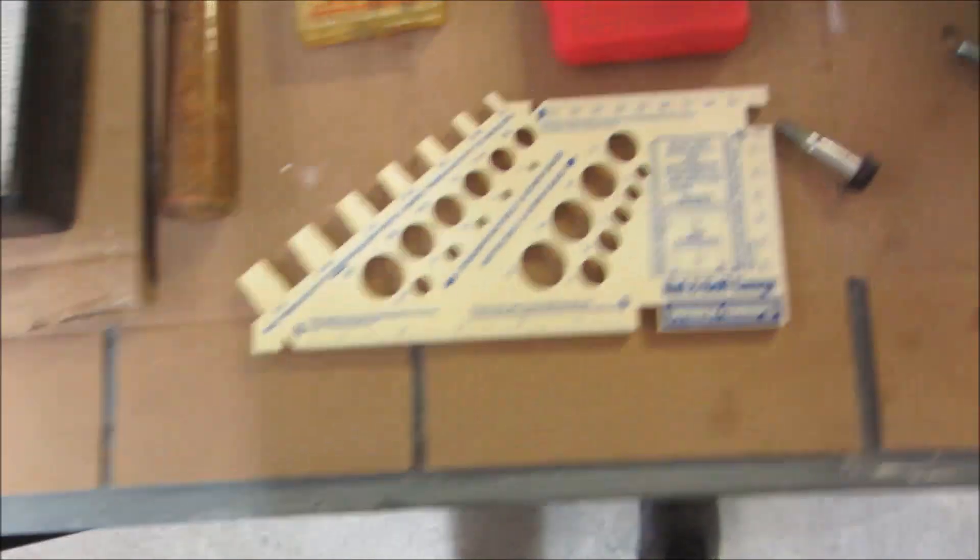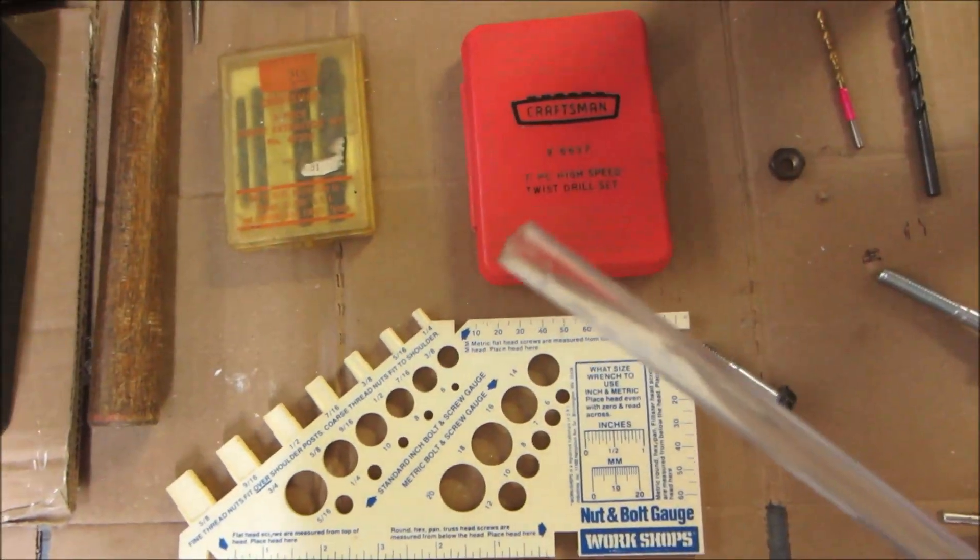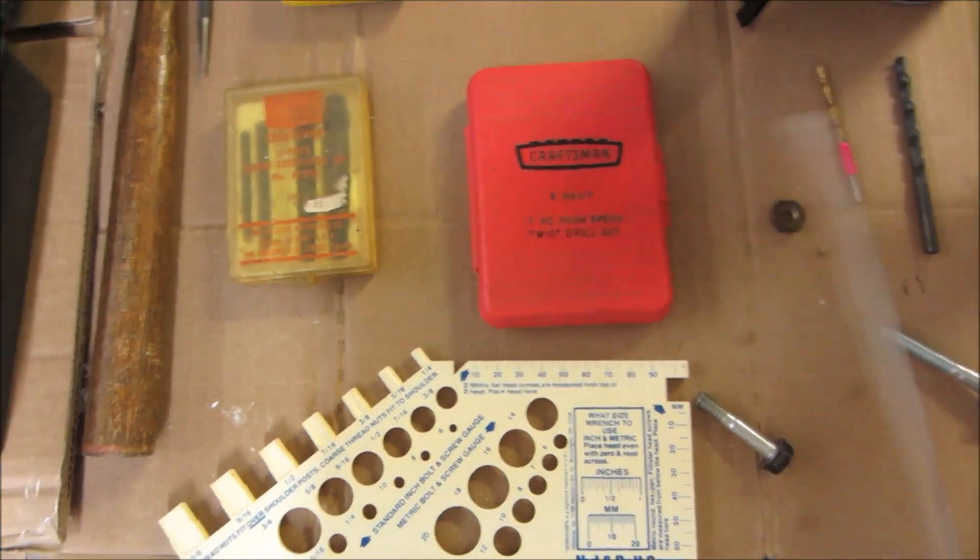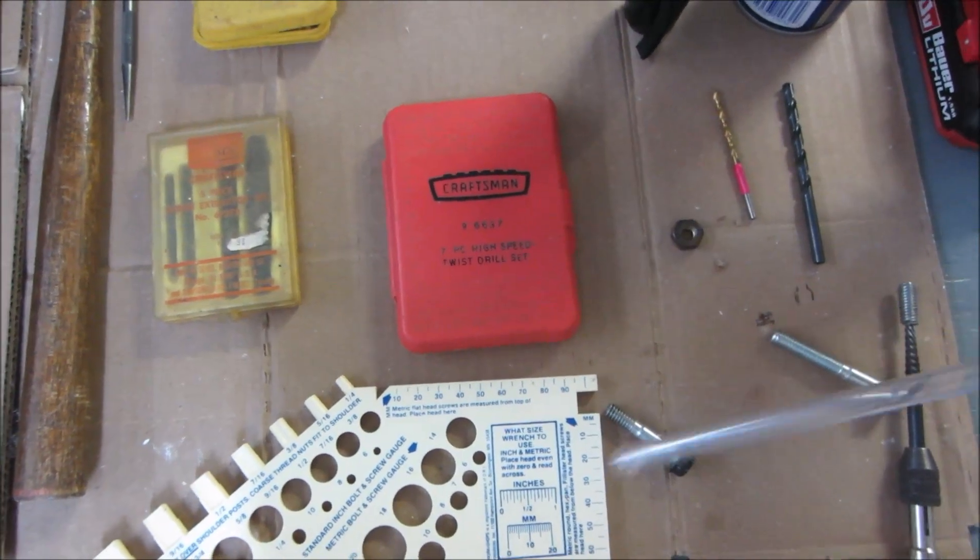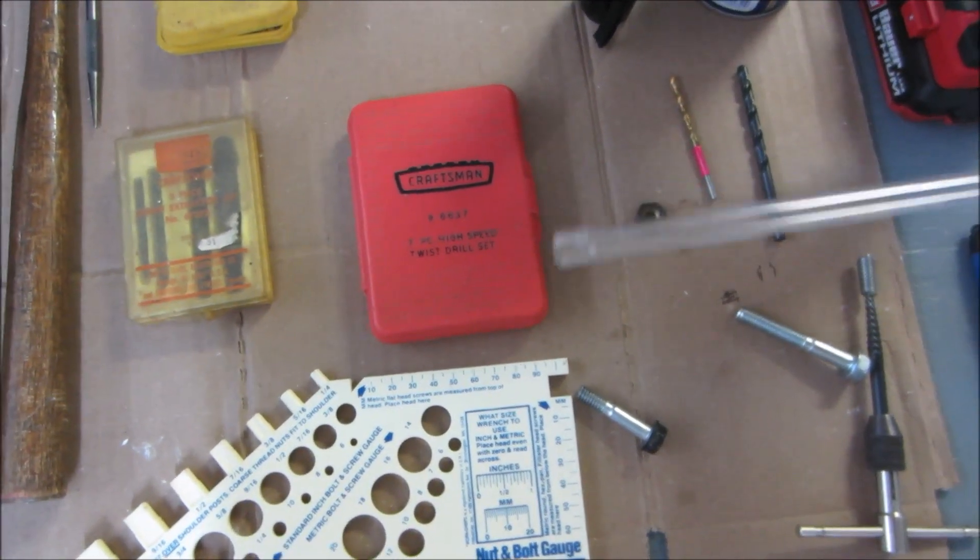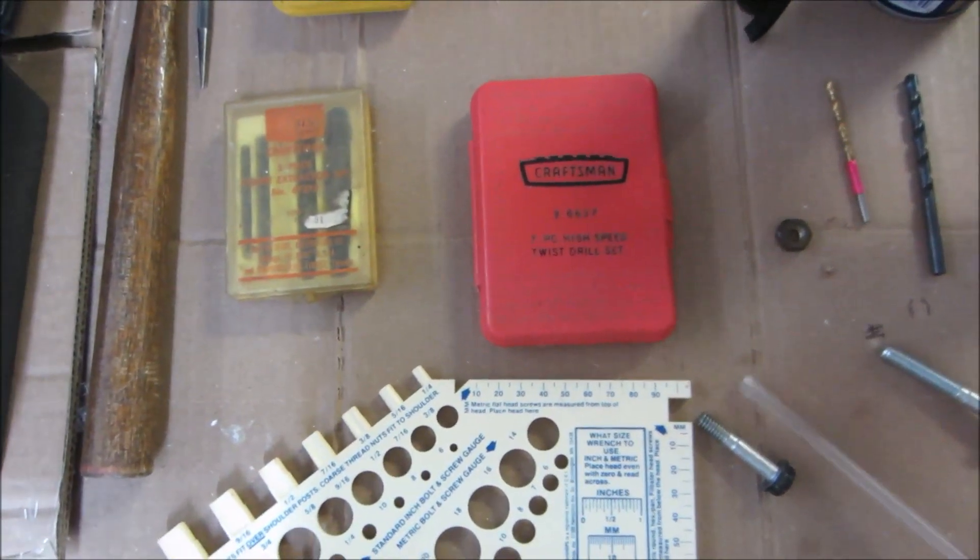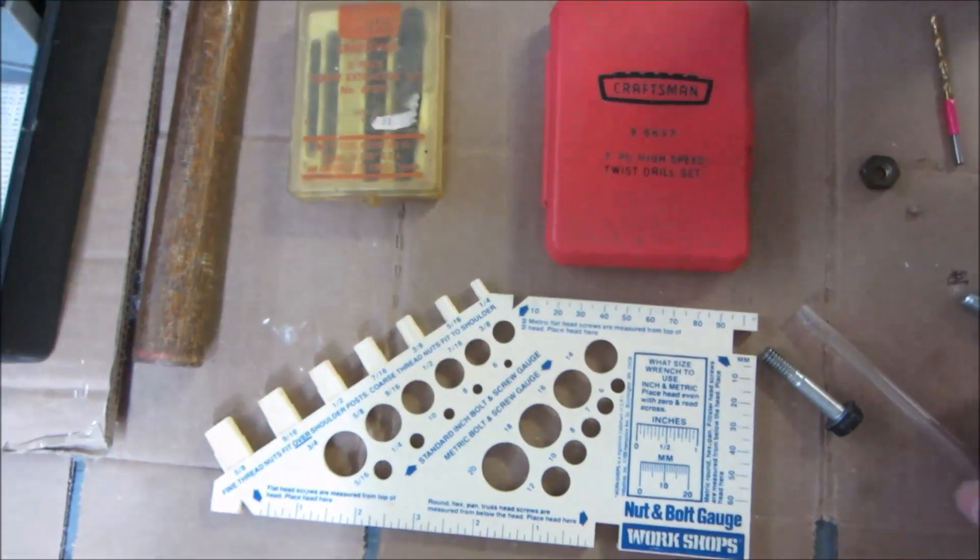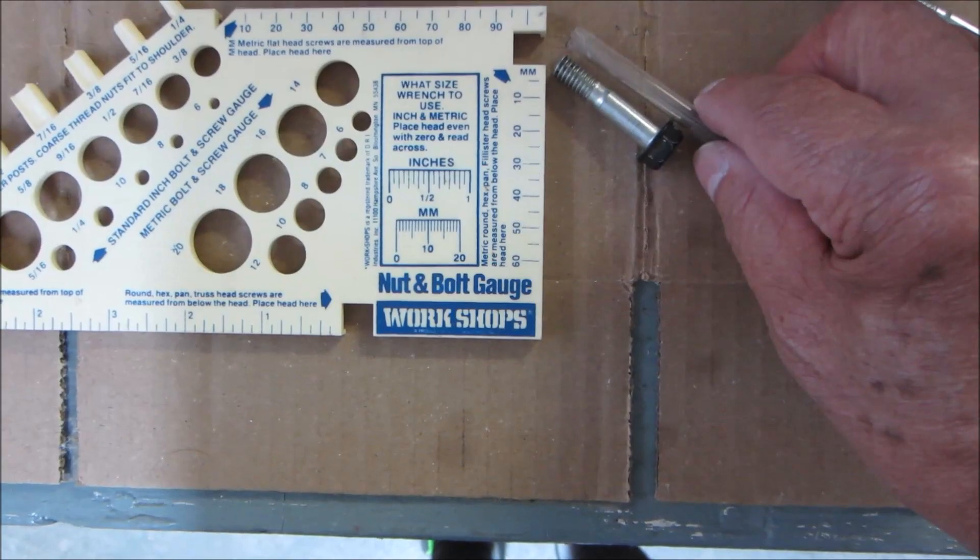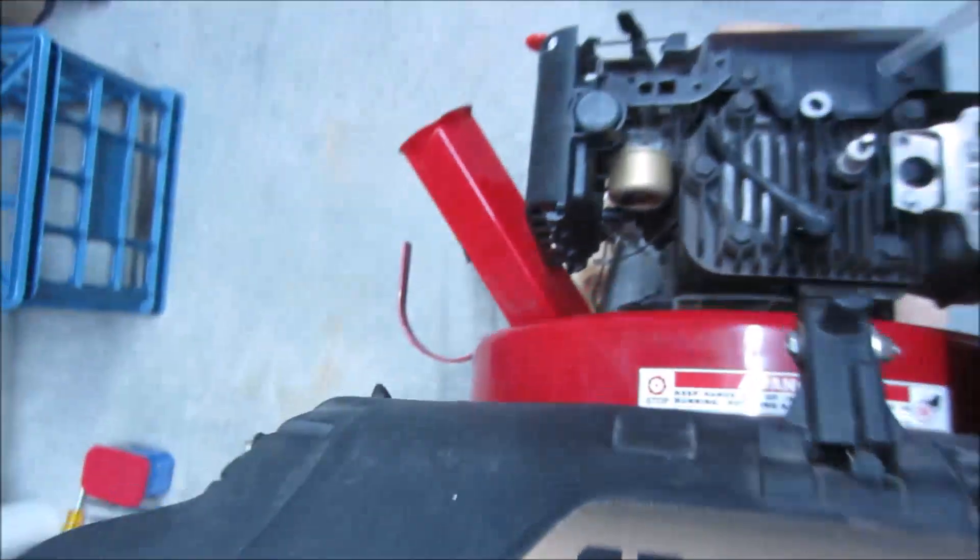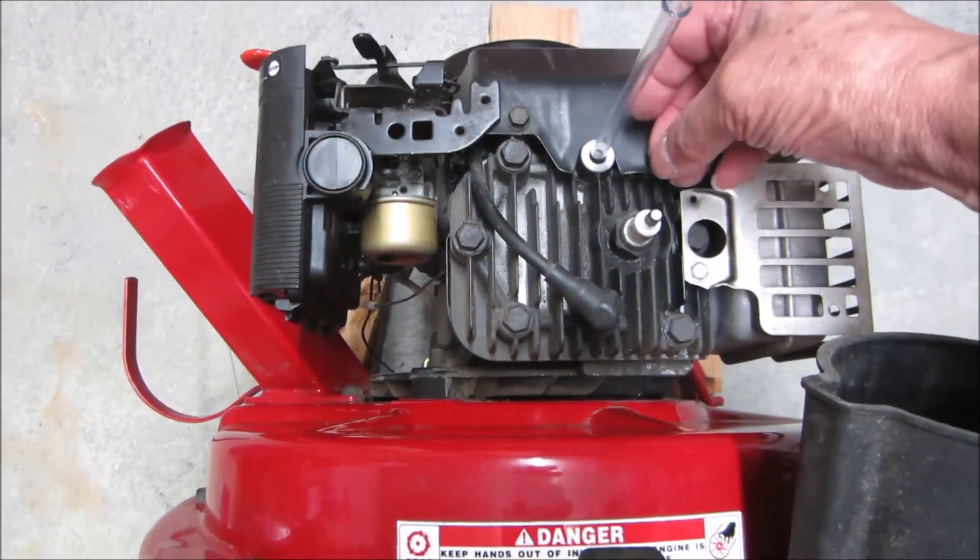So the next thing you have to do is set up some sort of drill guide so that you don't damage the threads of the cylinder head. Now this is a plastic like a parapet almost. I cut a length exactly that size and stuck it down the hole.